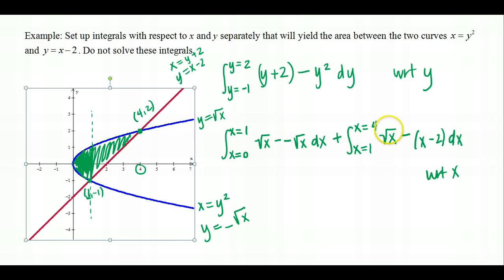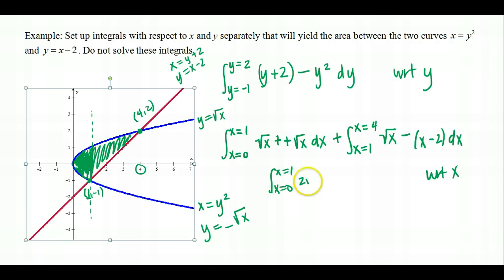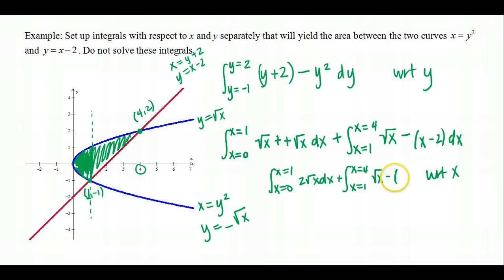Be careful with parentheses when distributing the negative sign — the bottom function must be enclosed in parentheses so the negative distributes correctly. Simplifying: the first integral becomes ∫₀¹ 2√x dx, and the second is ∫₁⁴ (√x − x + 2) dx. This setup, while not fully simplified, is correct. Both setups — with respect to y as one integral, and with respect to x as two integrals — yield the same area.